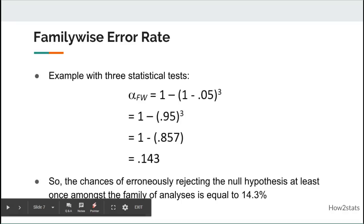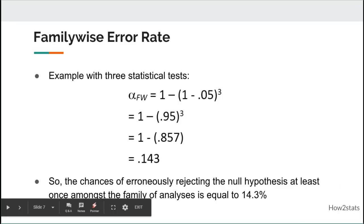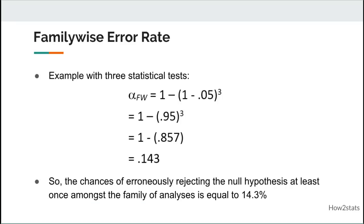That implies the chances of erroneously rejecting the null hypothesis at least once amongst the family of analyses is equal to 14.3%. So instead of thinking you're going to commit an error at only 5% probability, you would be thinking incorrectly, because with each subsequent analysis on the same sample of data the family-wise error rate increases — with just 3 analyses you're already up to 14.3%.